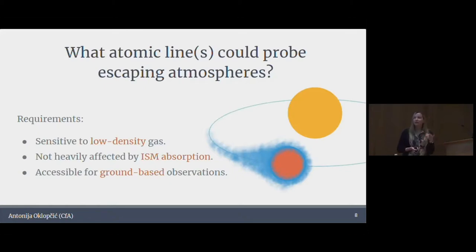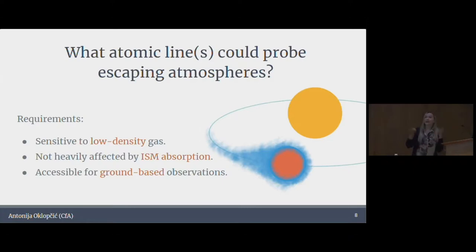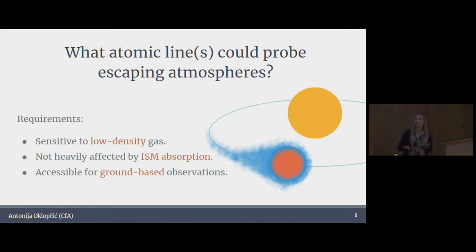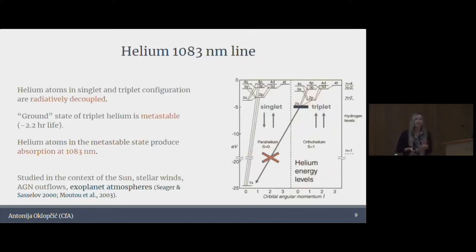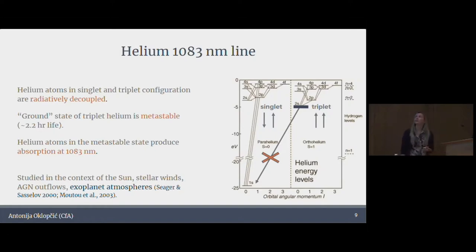Another requirement: it would be really nice if it were observable from the ground, unlike Lyman alpha, which can only be observed with the Hubble Space Telescope. Then we have many more telescopes available to us and can observe much larger samples of planets and learn a lot more. It turns out there is at least one line that satisfies all of these conditions, and that is the helium line at 1083 nanometers.